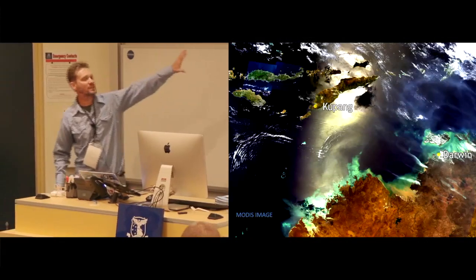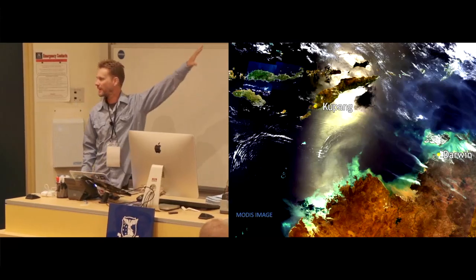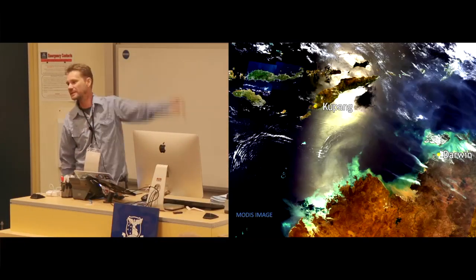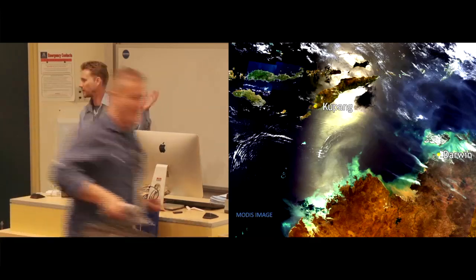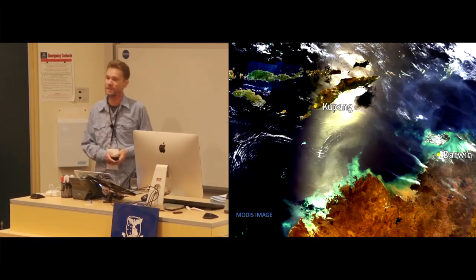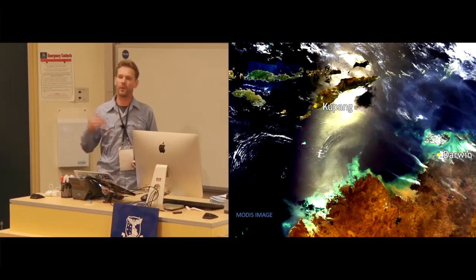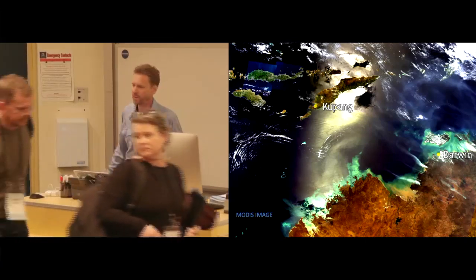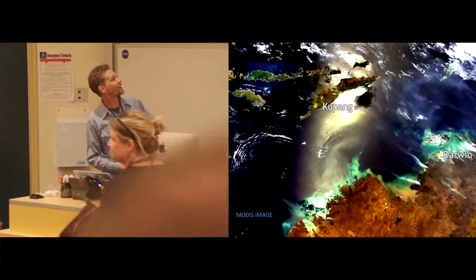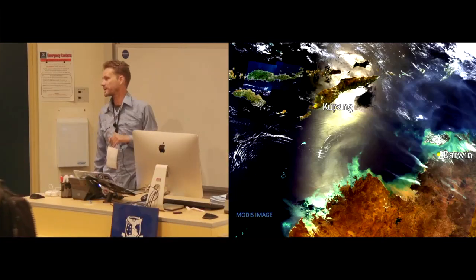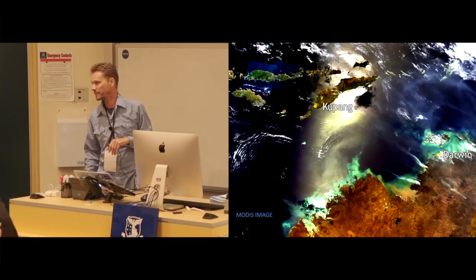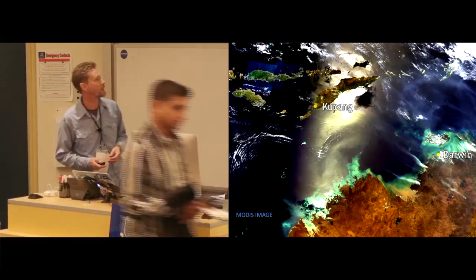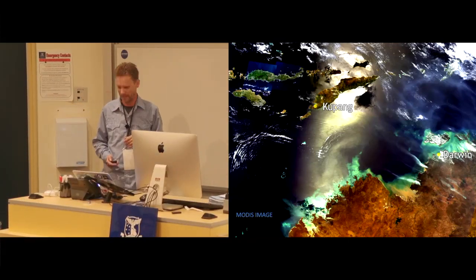Thank you very much. I thought I'd start with this image just to let you know where Darwin is. So very close to Indonesia and Timor-Leste, about 800 kilometres from here to Indonesia as opposed to the 4,000 kilometres I had to travel to come down to remote regional Melbourne. So bordering onto a country of 270 million people, with tremendous opportunities to work in the geospatial space where I've been working for the last 15 years.